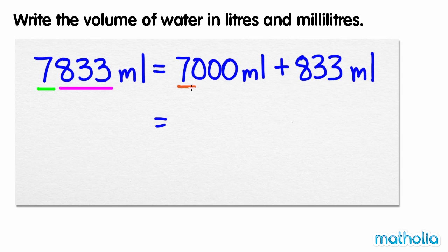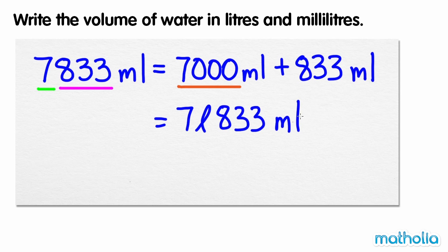7,000 millilitres is equal to 7 litres, so the volume of water is 7 litres, 833 millilitres.